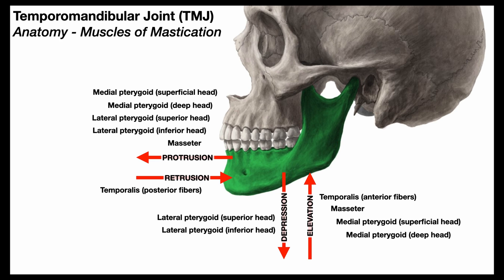Quite a few muscles are involved in mandibular elevation and protrusion, but not many are involved in mandibular depression and retrusion. As a result, elevation and protrusion are stronger and produce more force than retrusion and depression — and you can actually test this with manual muscle tests, where you'll see that elevation and protrusion are stronger than depression and retrusion.